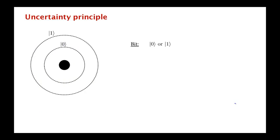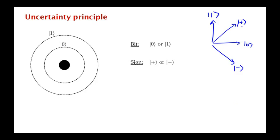We also have this notion of the uncertainty principle for qubits. We could measure the qubit either in the bit basis — zero, one — or in the sign basis, where plus is an equal superposition of zero and one, and minus is an opposite superposition of zero and one. The uncertainty principle tells us we cannot know both the bit value and the sign value simultaneously. If we measure in the bit basis, our qubit is either in state zero or state one, but it's maximally uncertain with respect to the sign basis. And vice versa — if we measure in the sign basis, we are maximally uncertain with respect to the bit basis.